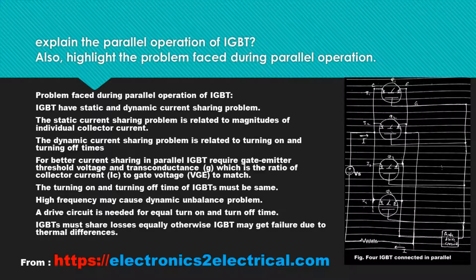For better current sharing, parallel IGBTs require gate-emitter threshold voltage and transconductance G, which is the ratio of collector current IC to gate voltage VGE, to match. The turning on and turning off times of IGBTs must be the same. High frequency may cause dynamic unbalance problems. A drive circuit is needed for equal turn-on and turn-off time. IGBTs must share losses equally, otherwise an IGBT may fail due to thermal differences.